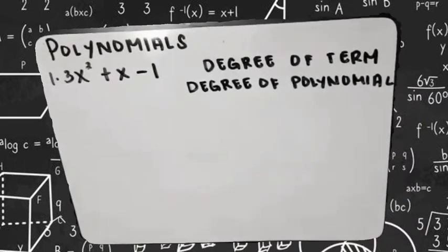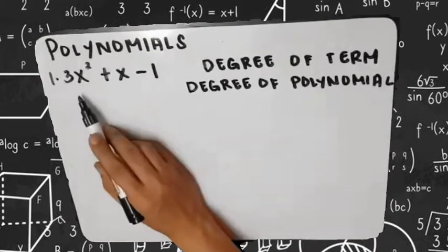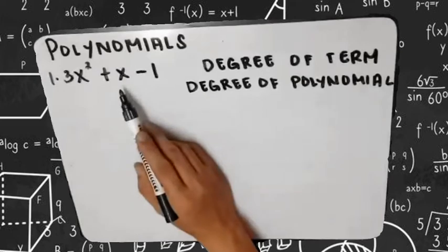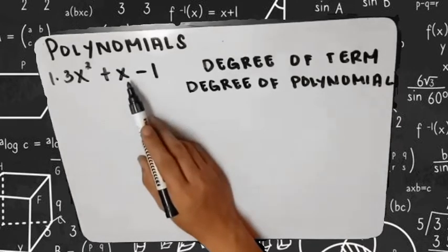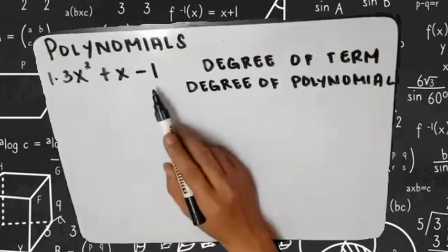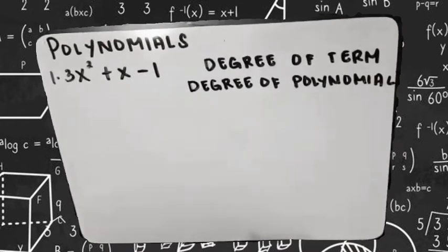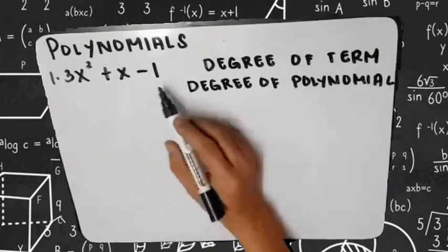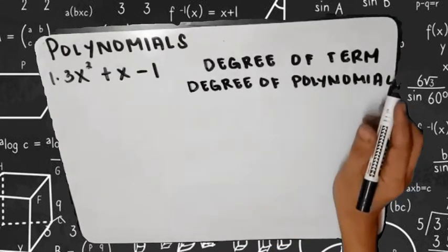To find the degree of term and degree of polynomial — for the degree of a term, we refer to each term individually. In our example, the degree of the first term 3x squared is 2, because its exponent is 2. For the second term x, the degree is 1. For the third term (the constant), the degree of term is 0. So we have degrees: 2, 1, and 0 — one for each term.